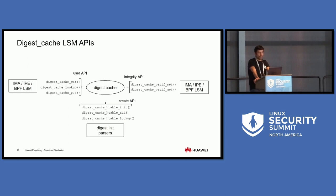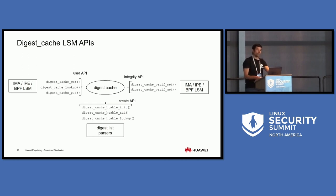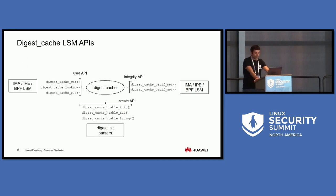The API of the Digest Cache LSM exposed to integrity providers — IMA, IPE, and BPF LSM — includes a user API with digest_cache_get, digest_cache_lookup, and digest_cache_put for querying digests. There is also an integrity API for annotating the result of package signature verification and deciding whether to use the digest cache — for example, if PGP signature verification failed, the digest cache should not be used because it was not created from authentic data. Finally, there is a digest list parser for different data formats, and digest_cache_htable init, add, and lookup functions.